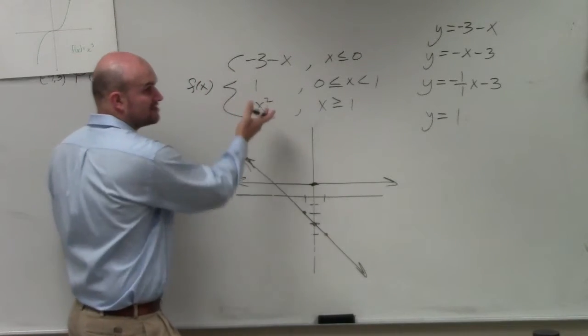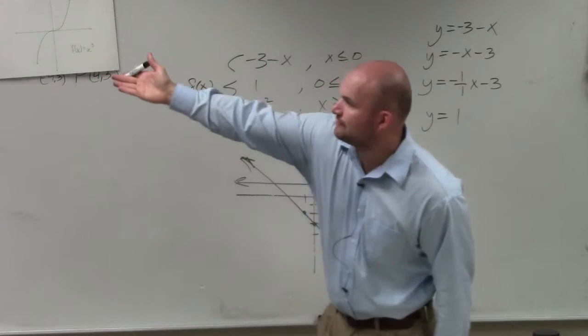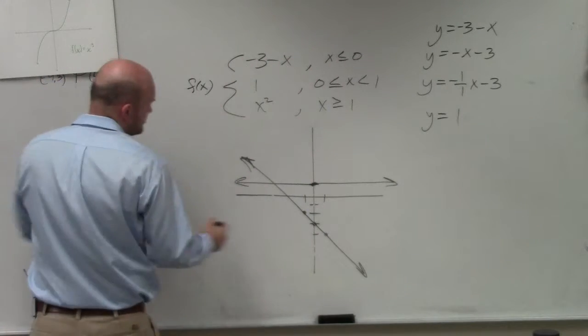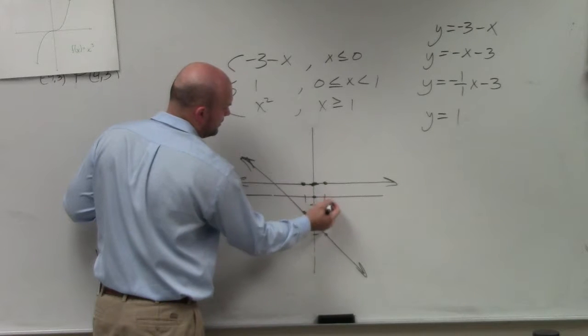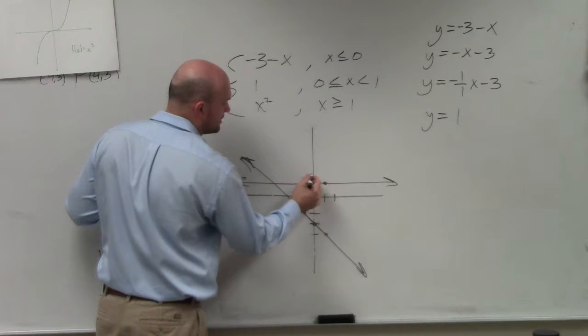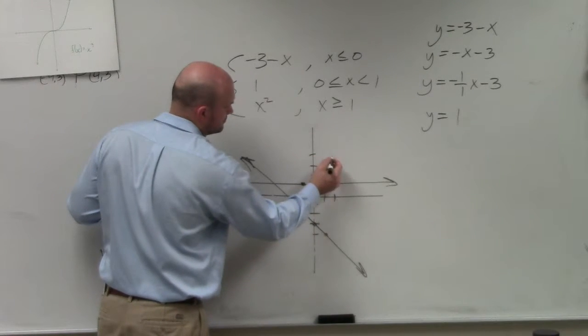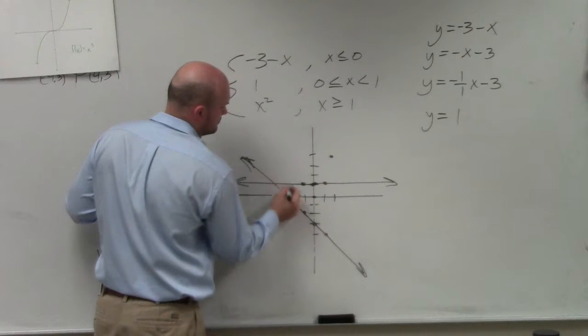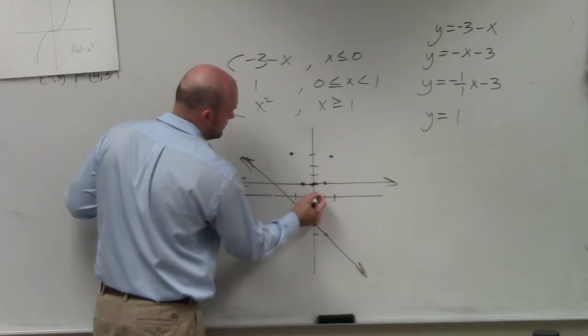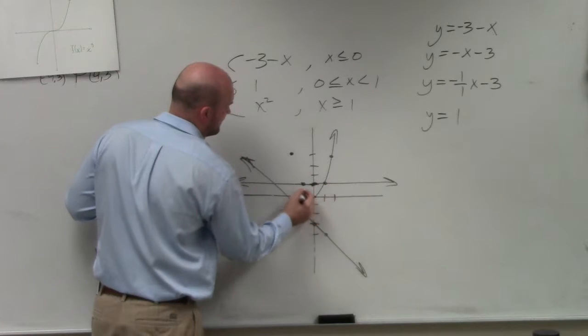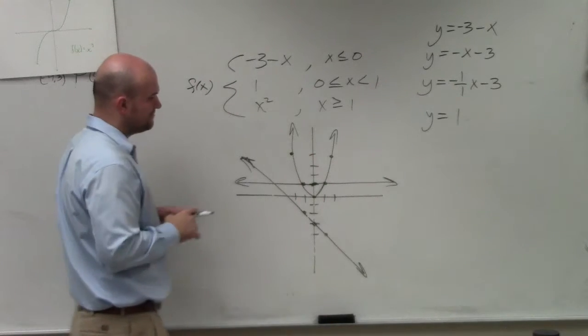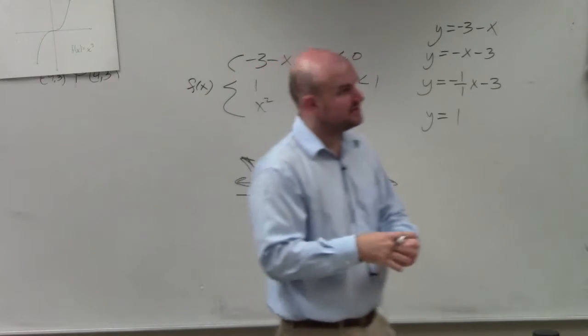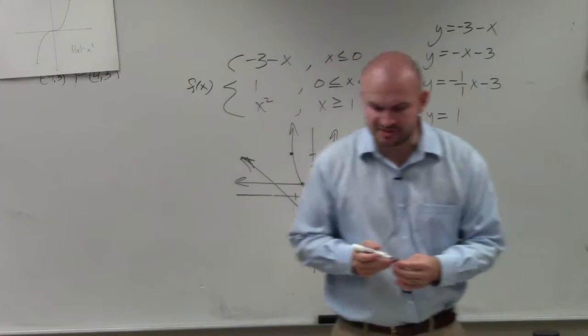Then we have x squared, which that graph was provided to you. It's right here. If you remember in algebra 2, that's over 1, up 1. Over 1, up 1. Over 2, up 4. 1, 2, 3, 4. And that's our u-shaped graph. So now I graphed all the functions.